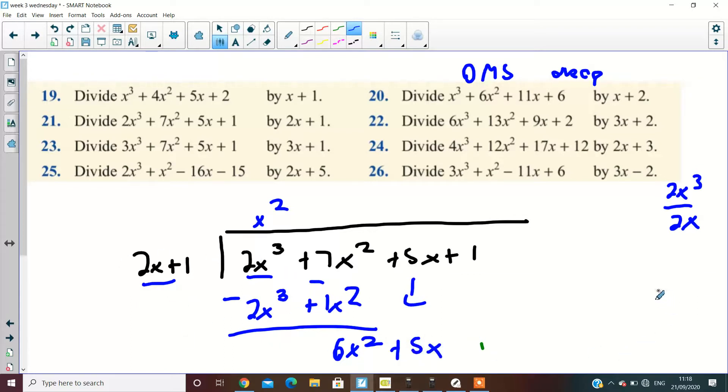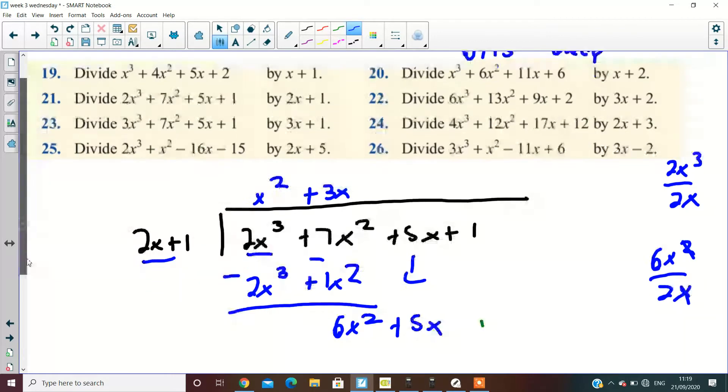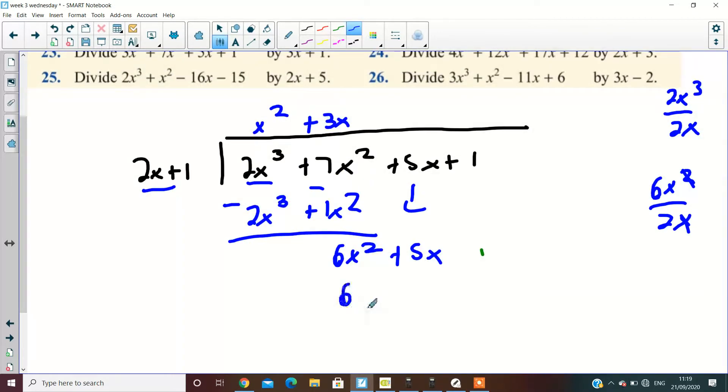Do the drop, and we get 5x. 2x into 6x². How many times are we looking at this time? 3x. The x is cancelled. 6x divided by 2 is 3x. Multiply it out. 3x times 2x is 6x². 3x times 1 is 3x. Once again, take it away. And what do we get?